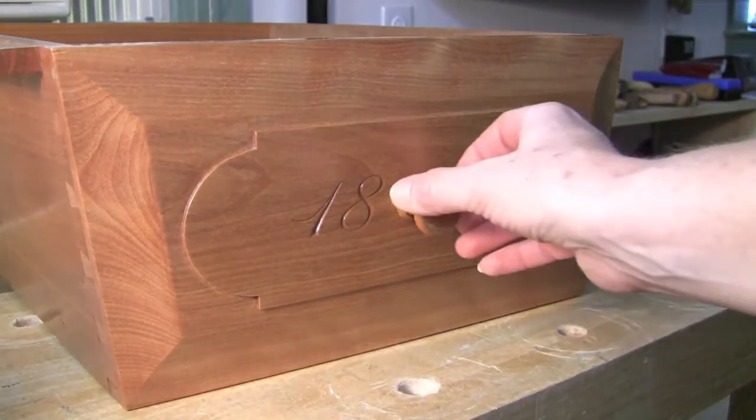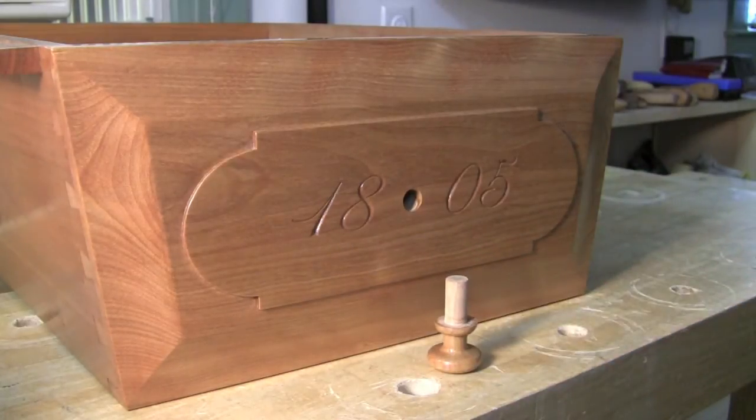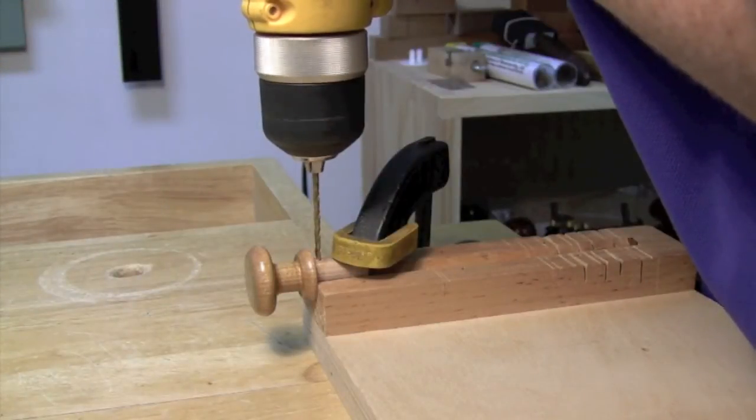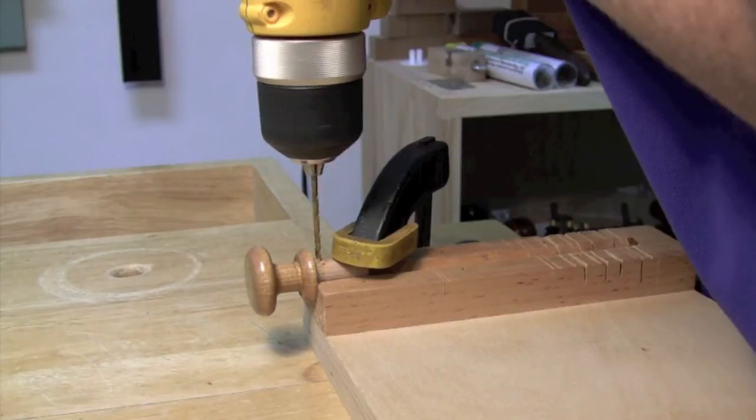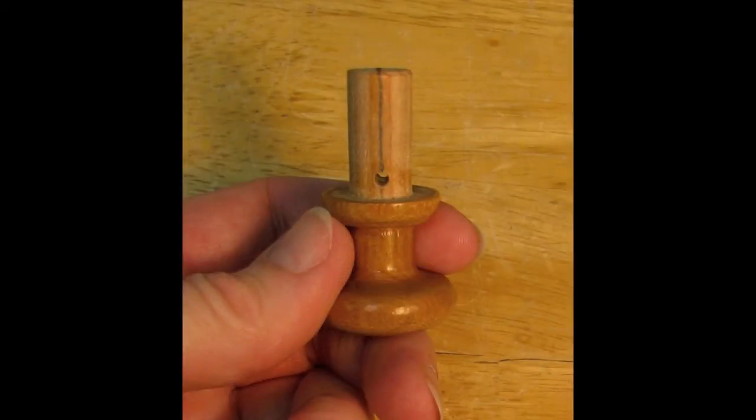We start with a slightly loose tenon. Drill a hole at the shoulder to prevent splitting the wood, and draw a pencil line down the center of the tenon to guide your handsaw.